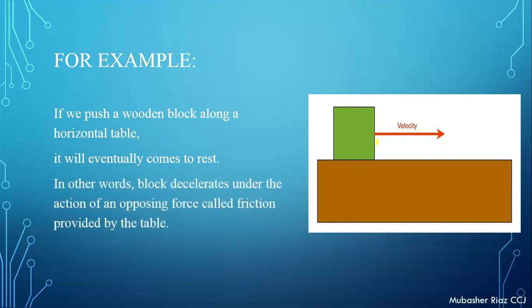This block decelerates under the action of an opposing force. That opposing force is called friction, and it is provided by the table top surface. This is why this moving block slows down and comes to rest. So this opposing force is actually called friction.